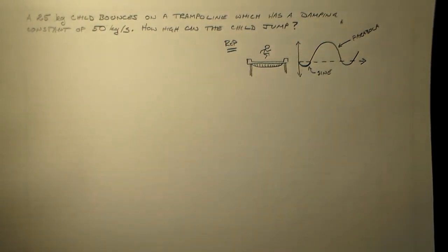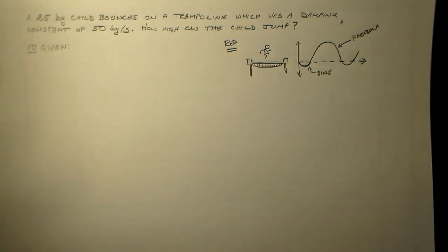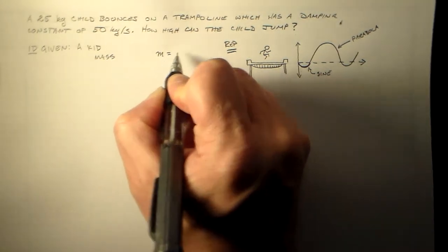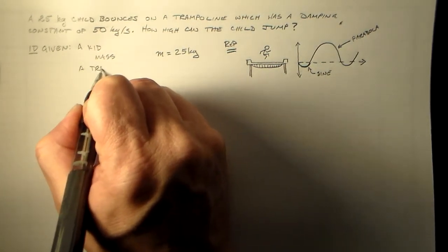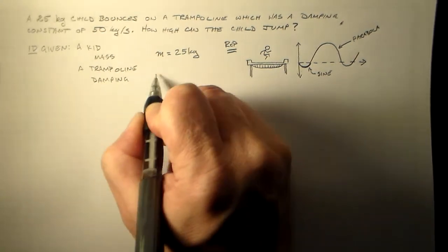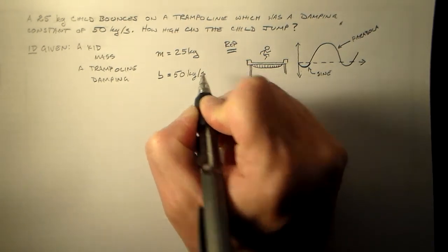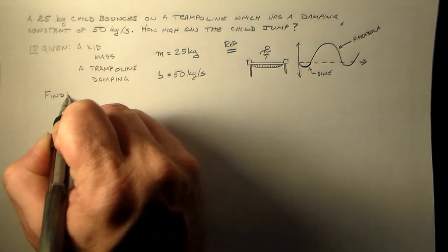And yes, so what I'd like to do is I'd like to try to guess exactly how high this kid can jump with a fairly simple model. Okay. So what do I know about this? I know I have a kid mass m equals 25 kilograms, and I have a trampoline. And it has a damping constant of b is equal to 50 kilograms per second. So what do I do with that? I want to find something. I want to find the maximum height.